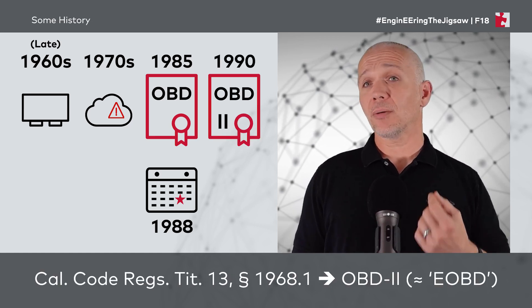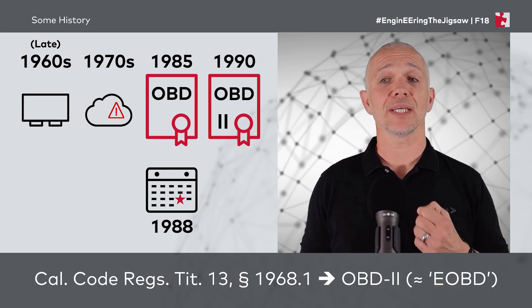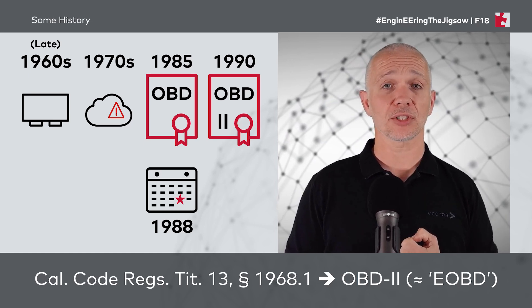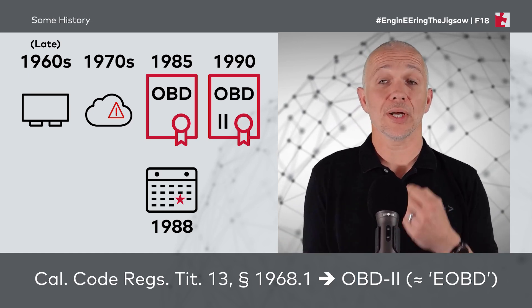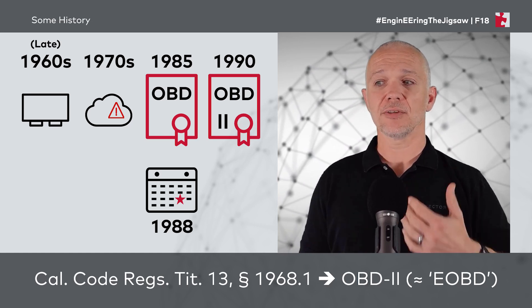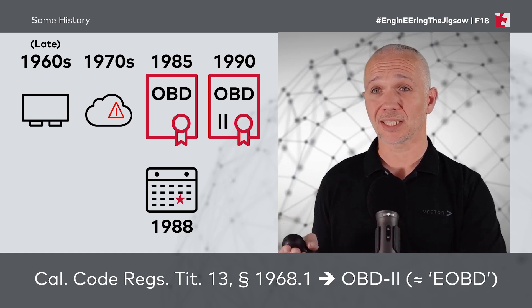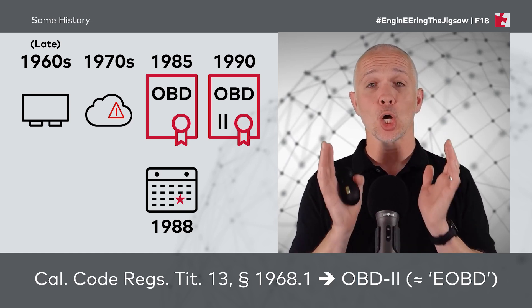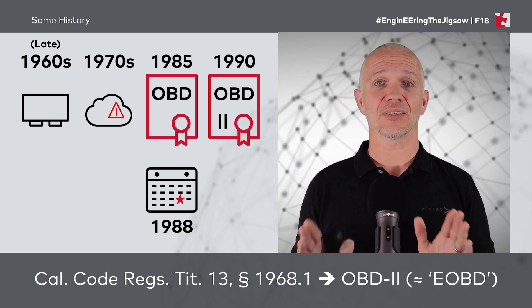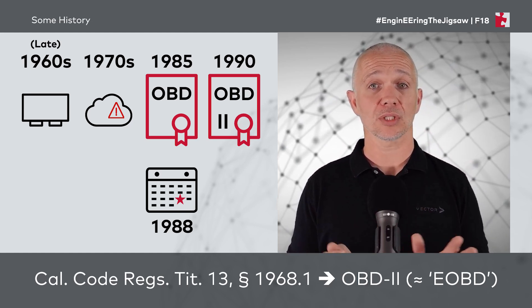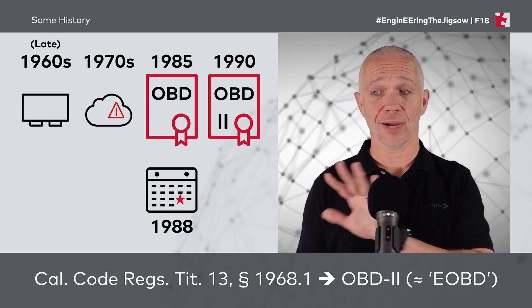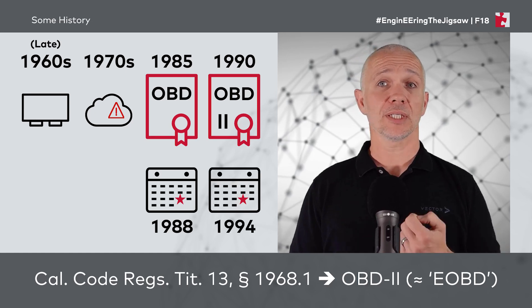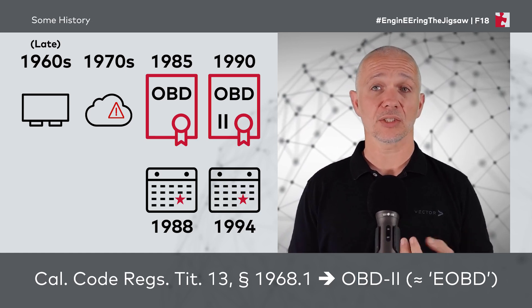Moving on a little bit, an update to the California Code of Regulations, Section 1968 Part 1 was published in 1990, two years after the original OBD regulations came into force. And these were for something called OBD2, a second edition of OBD. And if you've heard about European OBD, which actually came around several years later, this is roughly equivalent to OBD2. But there are really important differences, so if you're developing OBD software, you need to know the differences between the different markets and their requirements on onboard diagnostics, because they are different — you need to have configurable software to match those needs. OBD2 came into force in 1994, so in the mid-1990s — about 30 years ago now.